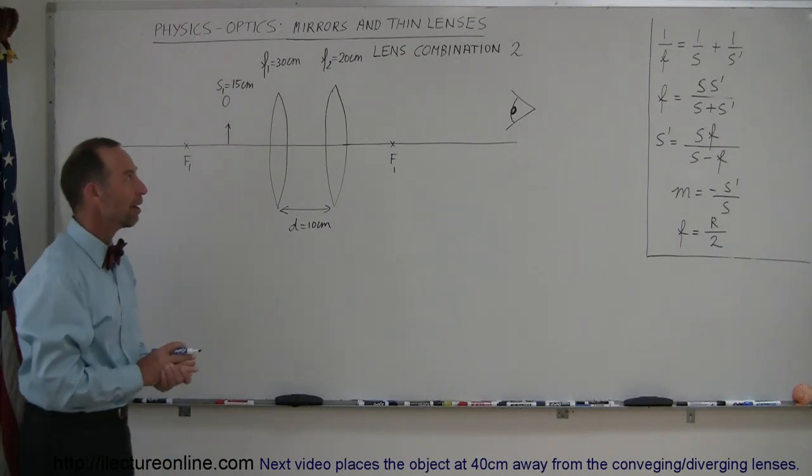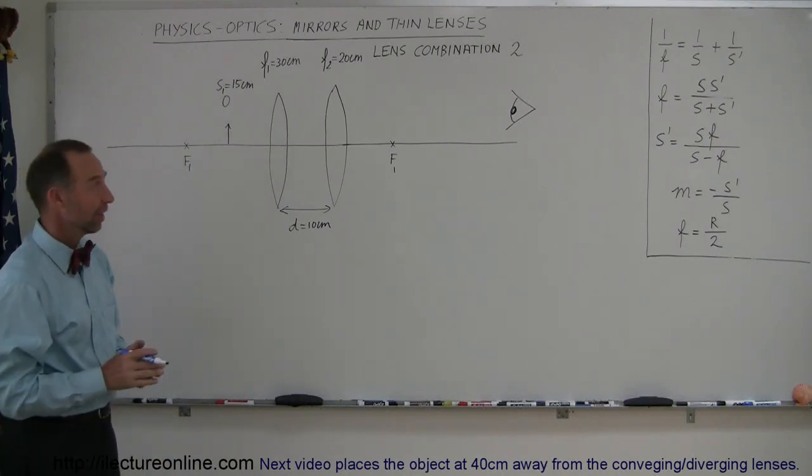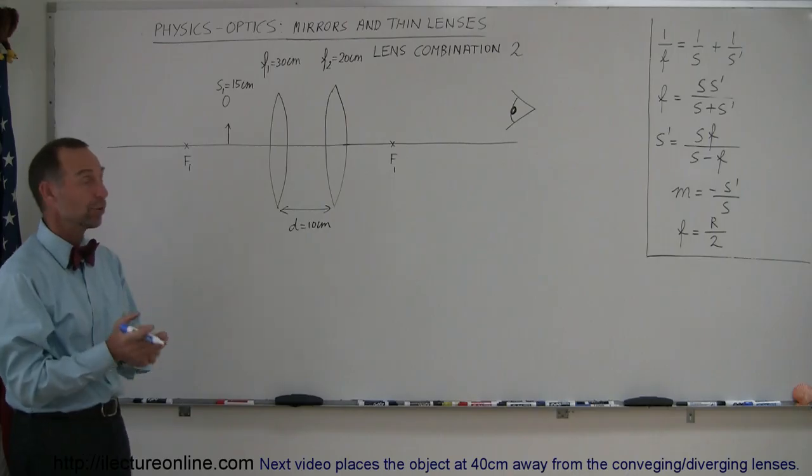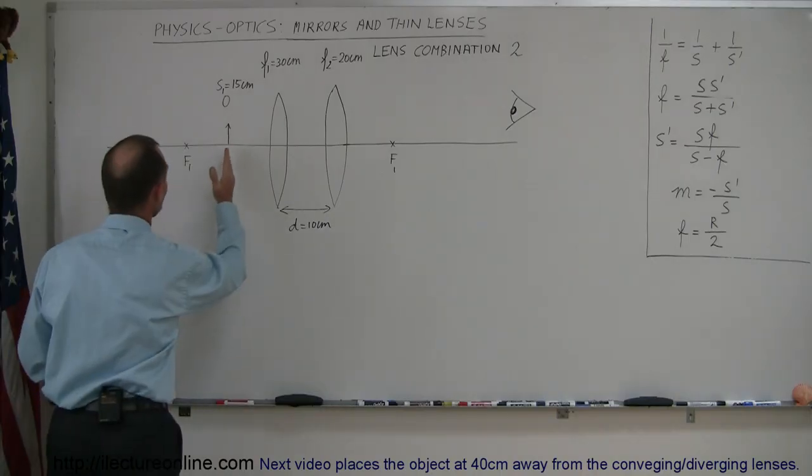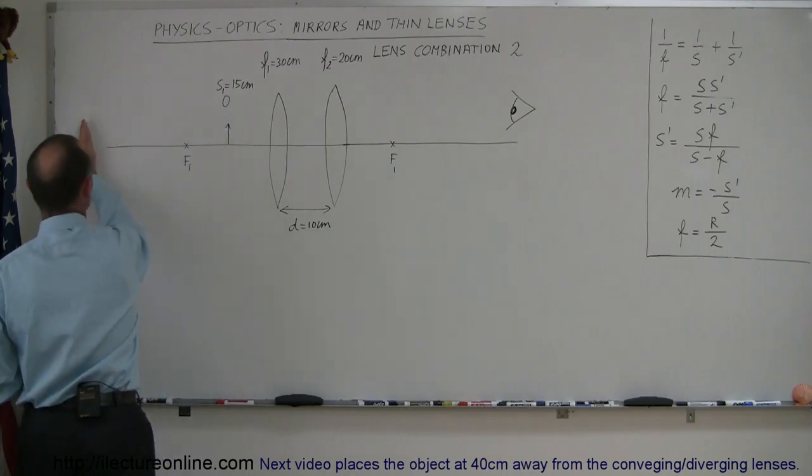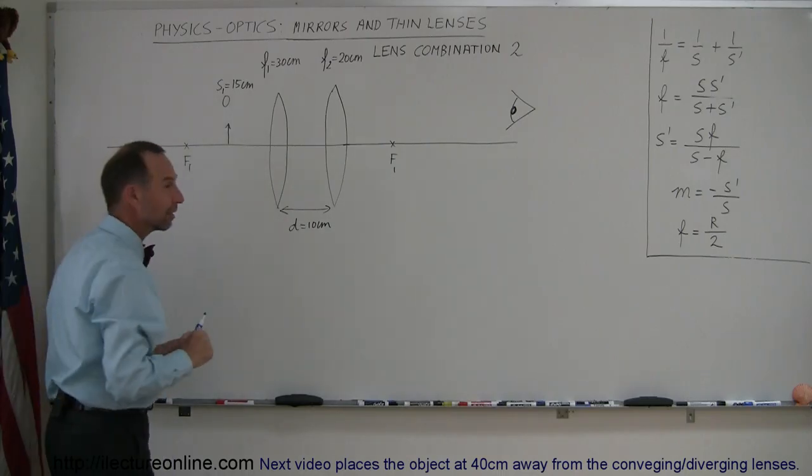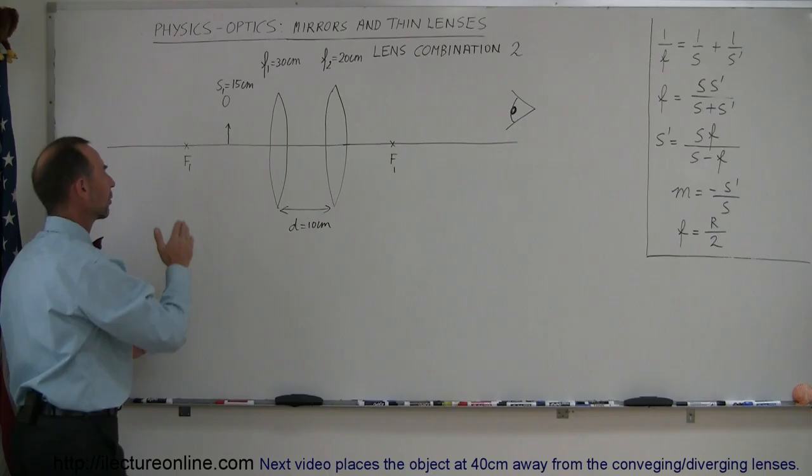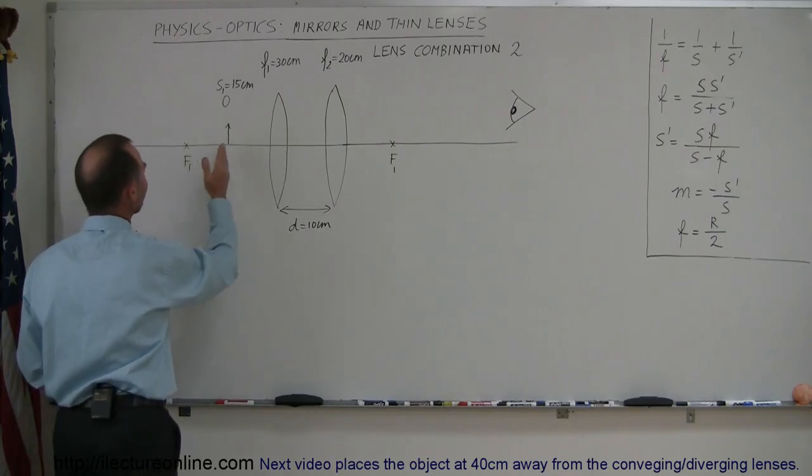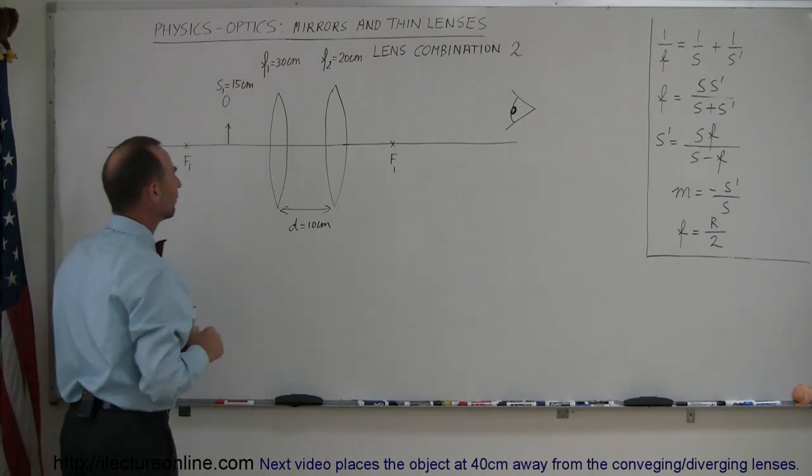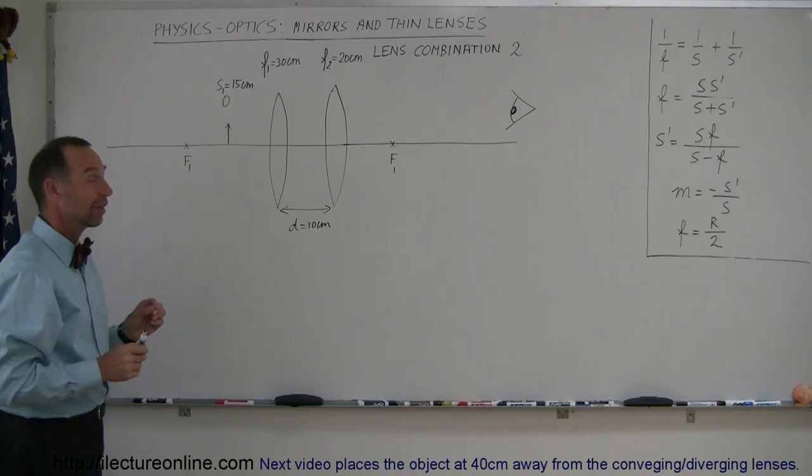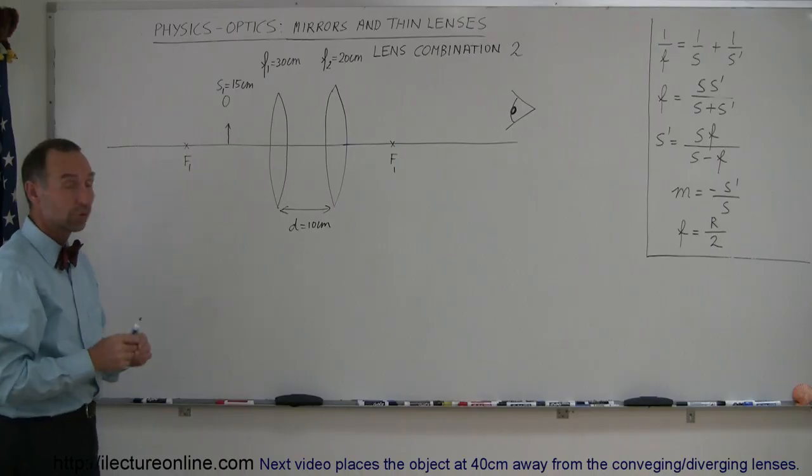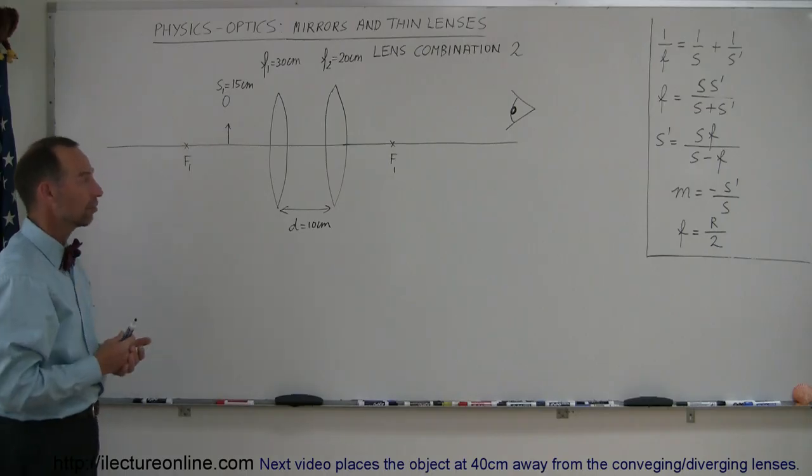And here's a second example of a lens combination. Actually, we're using the very same lenses as we used in combination 1. The only difference here is that instead of placing the object far away from the first lens, meaning beyond the focal point of the first lens, we're now going to place the object inside the focal point of the first lens. If you remember right, that means that the first image will be a virtual image and we'll see how that really plays out in this combination.